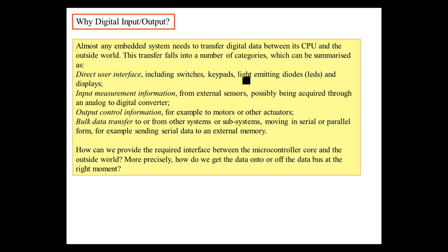Almost any embedded system needs to transfer digital data between its CPU and the outside world. This transfer falls into a number of categories, which we can summarize as: a direct user interface — like switches, keypads, LEDs — input measurement information from sensors, possibly from an external analog to digital converter, buttons or switches, output information control such as motors or other actuators, and bulk data transfer.